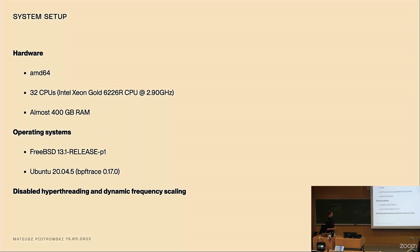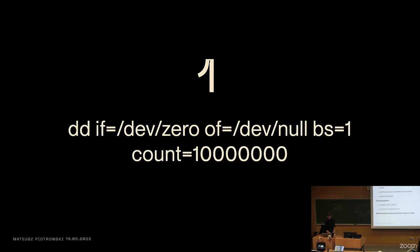For the system setup, I had two servers, AMD64. They both had 32 CPUs and almost 400 gigabytes of RAM. One of them was running FreeBSD 13.1 and the other one was running Ubuntu 20.04 with BPF-trace, not from the package repo because it was quite old, but I used the one that is now like three months old or something. I had newer features and it was also a bit more stable. And of course, I disabled some obvious things like hyper-threading, dynamic frequency scaling. I made sure that there are no administrative daemons running on the system when I'm benchmarking. I tried to make sure that the system is actually idling when I'm benchmarking.